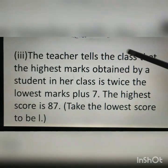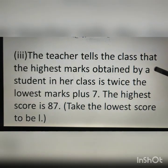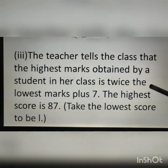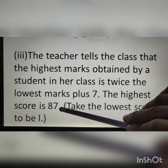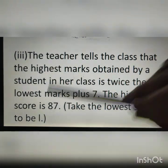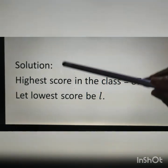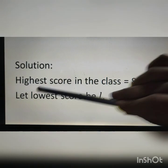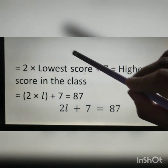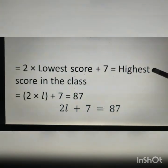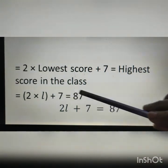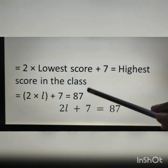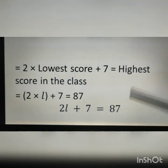Question number 3: the teacher tells the class that the highest marks obtained by a student in her class is twice the lowest marks plus 7. The highest score is 87. Take the lowest score to be L. Solution: highest score is 87, let lowest score be L. 2 times the lowest score plus 7 is equal to the highest score. So 2 into L plus 7 is equal to 87. Therefore, the equation is 2L plus 7 is equal to 87.